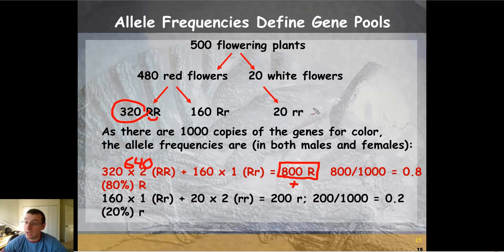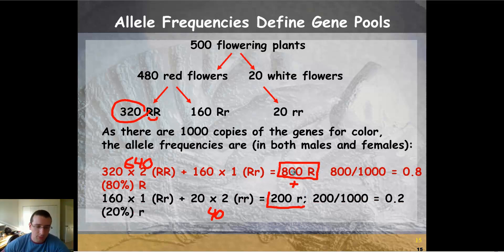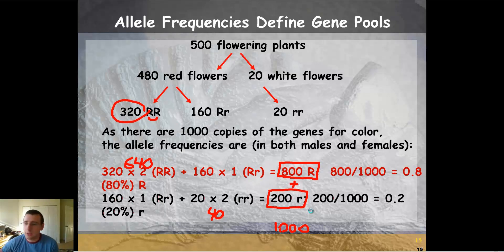There are 20 homozygous recessive genotypes, each with two little R alleles. So 20 times 2 gives a total of 40 little R alleles. Plus another 160 in the heterozygous genotype, giving a total of 200 recessive alleles. Adding both together gives 1,000 total copies of this gene. Of those, 200 are recessive alleles — that's 0.2, or 20% — and 800 are dominant alleles, or 80%. That's how we calculate allele frequencies.